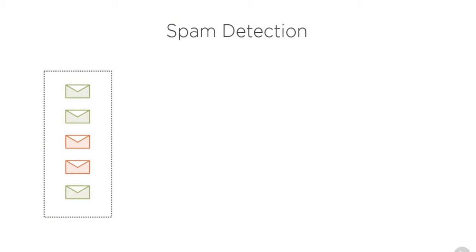Suppose you already have mails with you and some experts have manually labeled them as spam or non-spam. In this example, green ones are non-spam and red ones are spam. These are the examples that are already available to you.